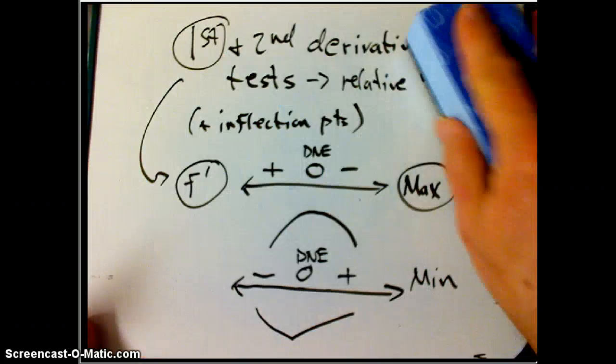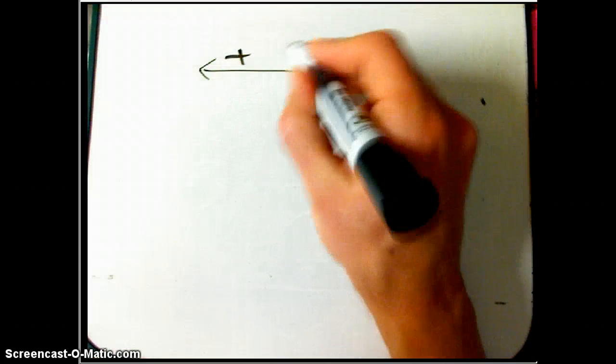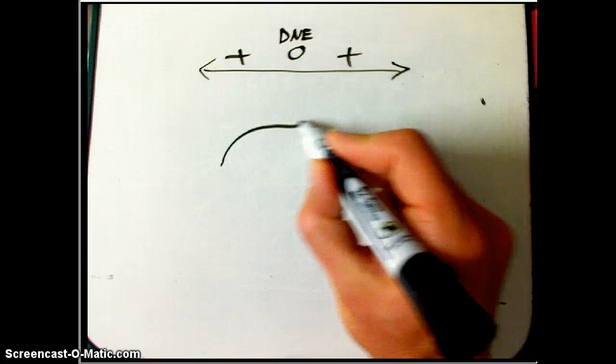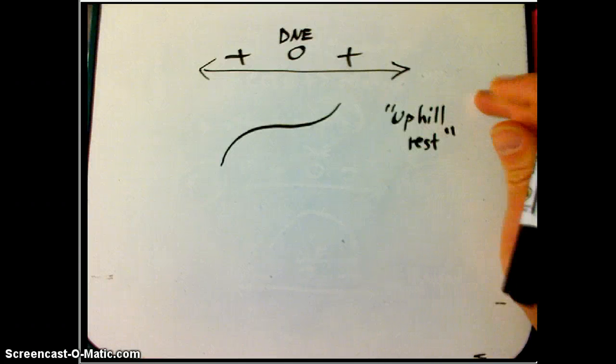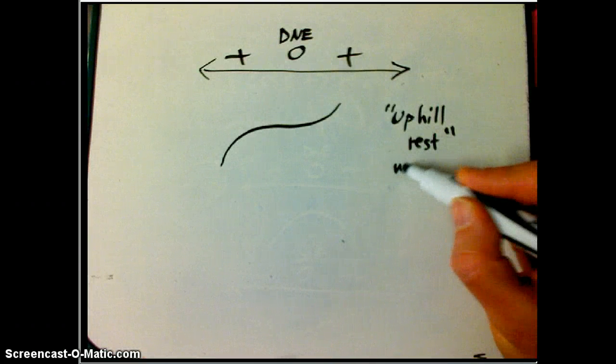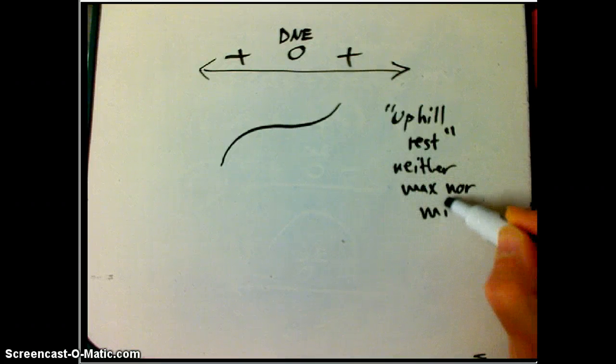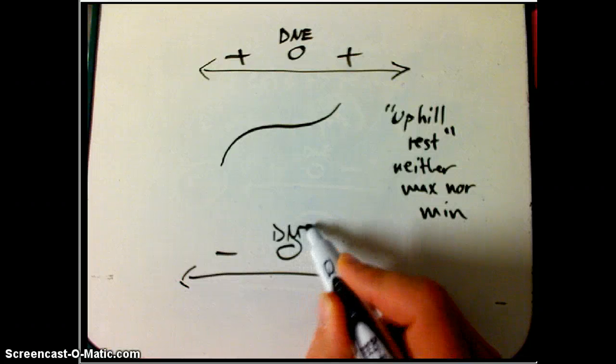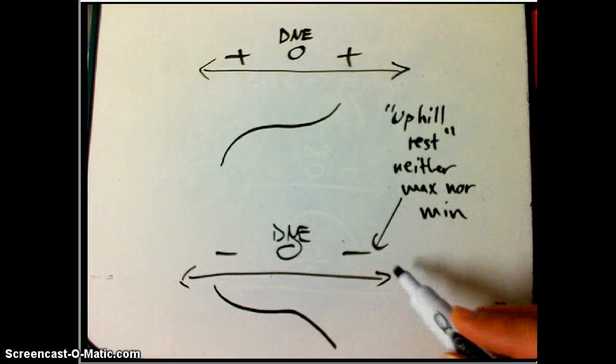So what if you see the other kinds of possibilities? What if you see plus zero plus, or DNE doesn't matter? Well, then it's going to be something like this, an uphill rest. It's not official terminology, but it's definitely neither max nor min. And similarly, a downhill rest, minus zero or DNE, minus, like that. Neither max nor min.